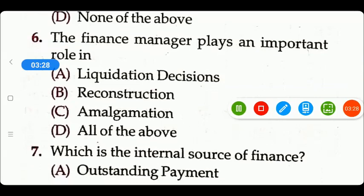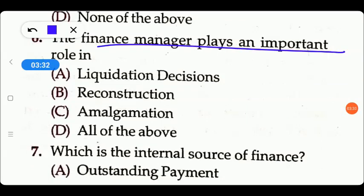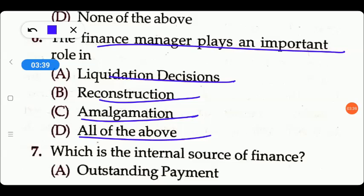Next question: the financial manager plays an important role — which role? Options are: liquidation decision, reconstruction, amalgamation, or all of the above. The financial manager checks whether reconstruction, liquidation, or amalgamation will be more beneficial, checking all terms and conditions, benefits, and limitations. Option D, all of the above, is the right answer.